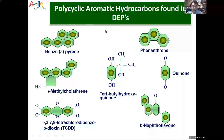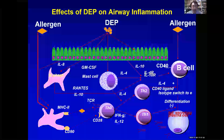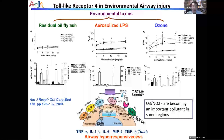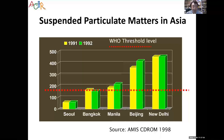Polycyclic aromatic hydrocarbons found in diesel exhaust particles (DEP) have definite carcinogenic effects and can induce Type 2 inflammation. As shown in this diagram, they damage epithelial cells and induce Type 2 inflammatory cells. We have previously shown that environmental factors, particularly ozone and DEP, interact with indoor endotoxin to activate innate immunity and cause inflammation.